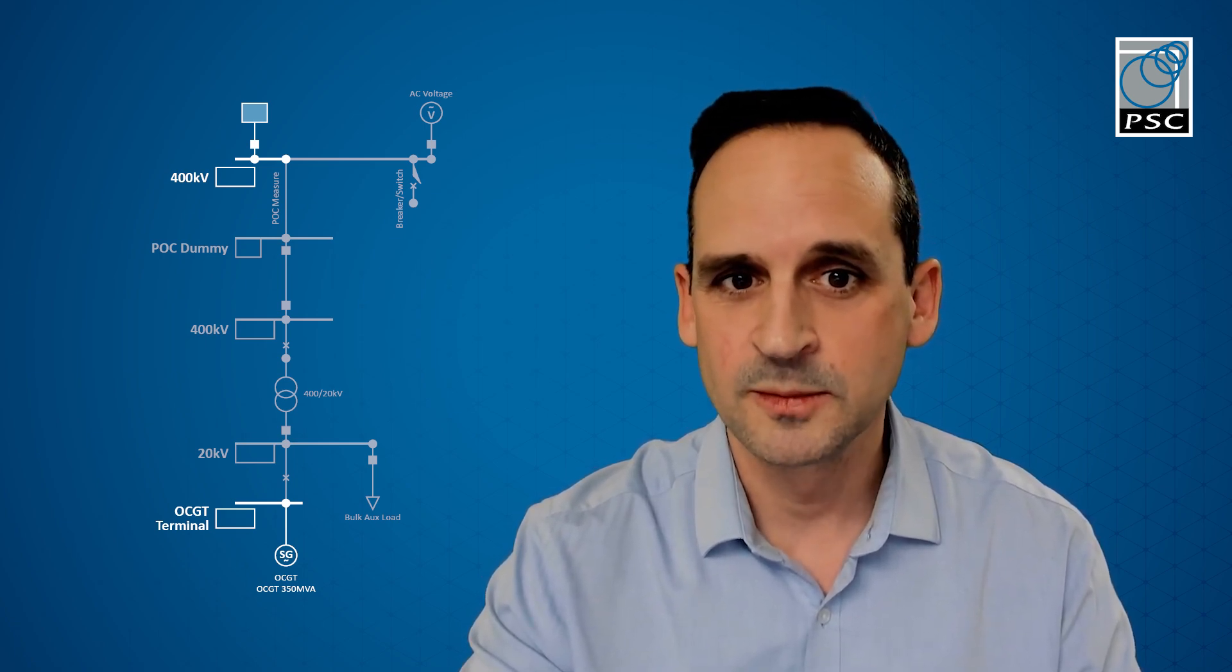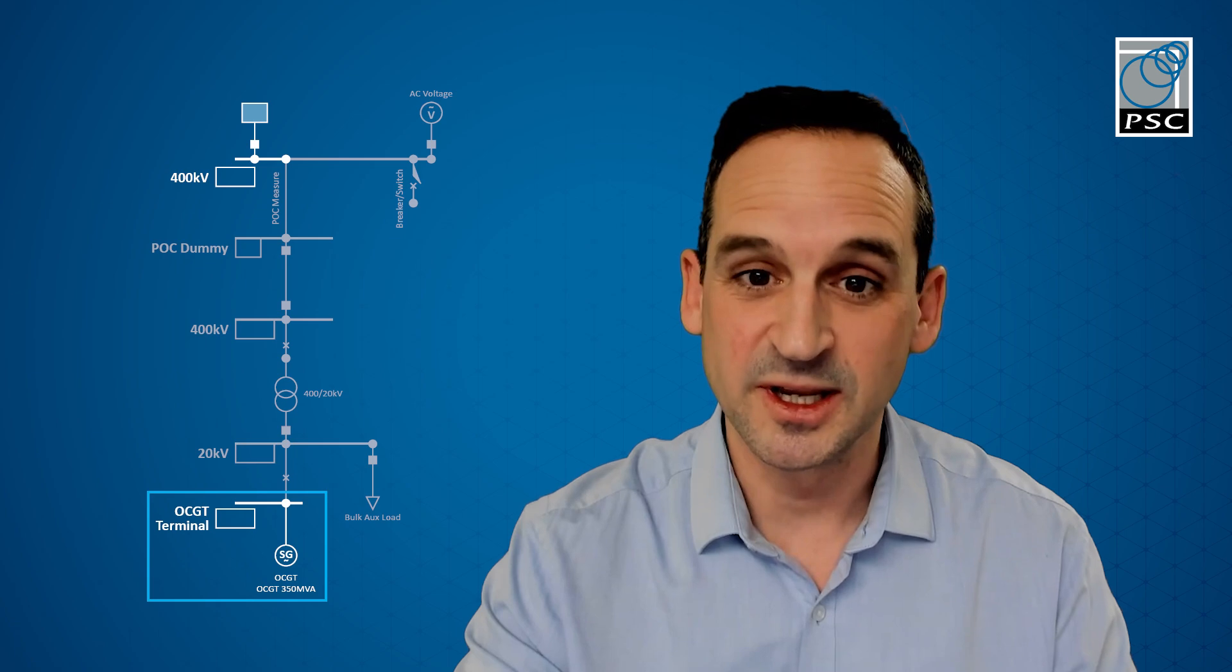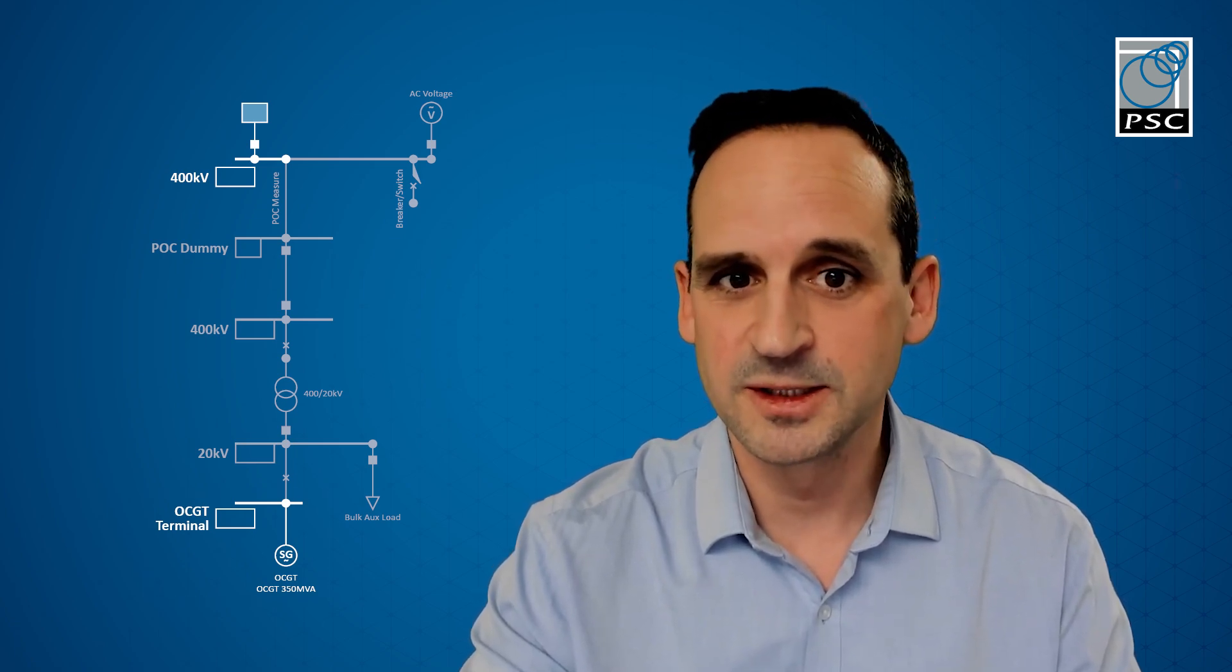For this one, we're going to look at a 350 MVA synchronous generator connected to a 400 kV grid supply point. In this model, you can see that 400 kV connection point at the top, which represents the wider 400 kV transmission network. At the bottom is the generator, which is connected to 20 kV, and between the two, there's several circuits and the transformer which creates the rest of the network.